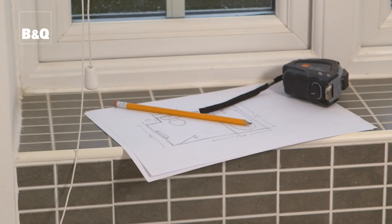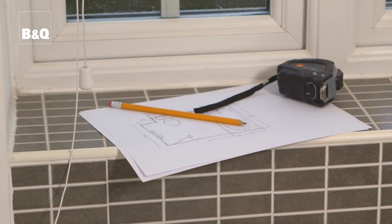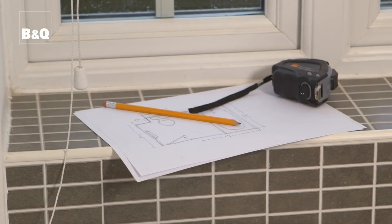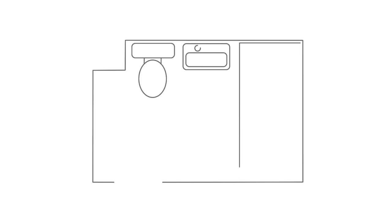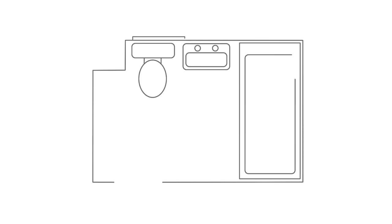First make a sketch of your bathroom's floor layout including the current position of the toilet, the basin, the bath etc. Also the position of the door and the direction in which it opens. Add details of any items such as the alcove.